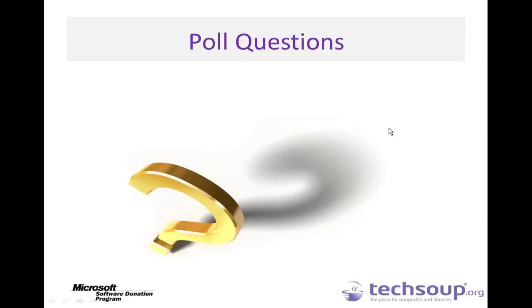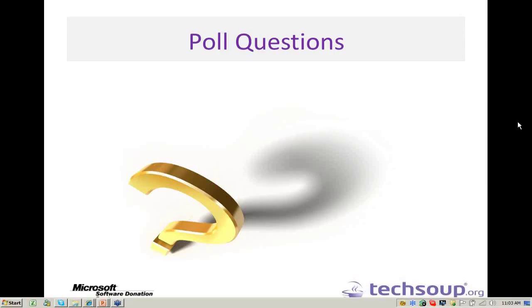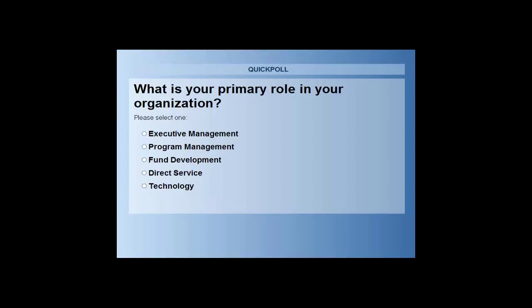To get us started, I want to take a couple of seconds and find out a little bit about you. What is your primary role in your organization? Your options are executive management, program management, fund development, direct service, and technology. I'll give you just a couple of seconds to answer that.